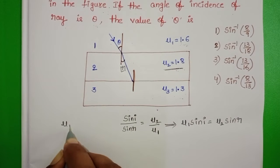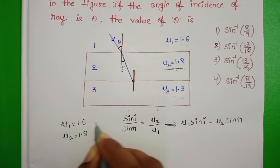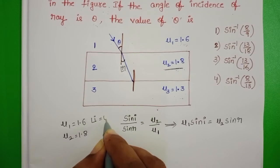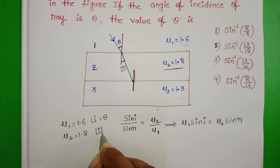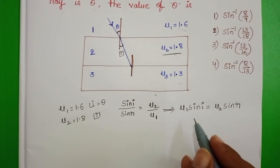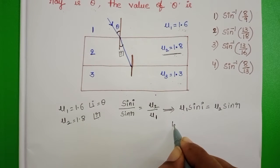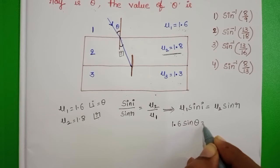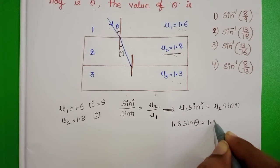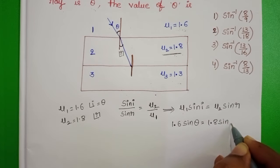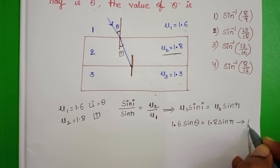Here refractive index of the first medium is 1.6, second medium is 1.8, angle of incidence is theta, and angle of refraction is r. In place of mu 1, 1.6 sin theta equals 1.8 sin r. Let it be equation 1.